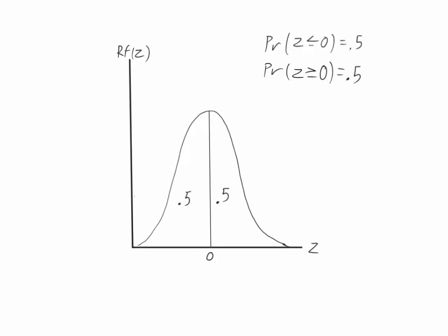Building our intuition further, it's good to understand that almost all of the probability under the standard normal distribution is exhausted between positive 3 and negative 3. We'll use this intuition and our images moving forward to understand the standard normal distribution and how to find areas under the curve.